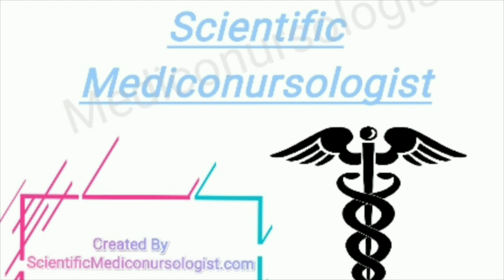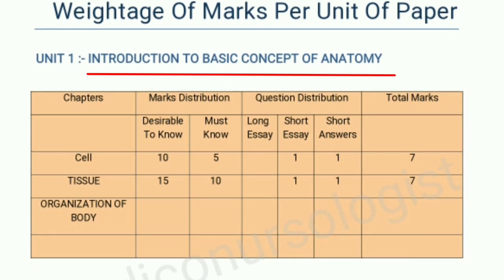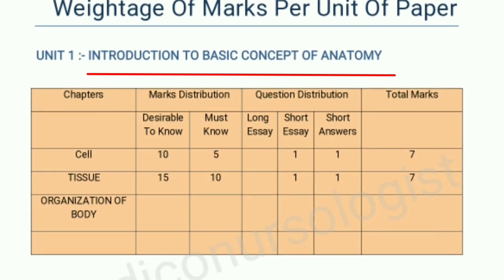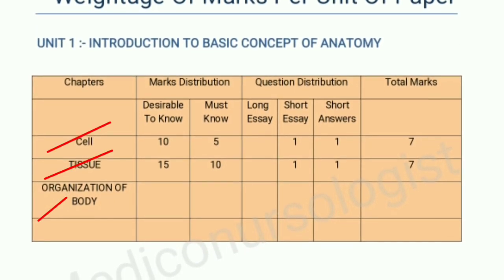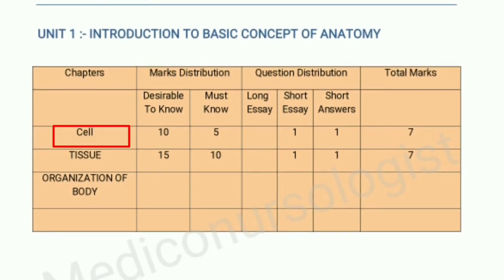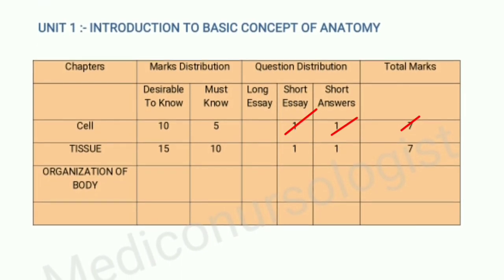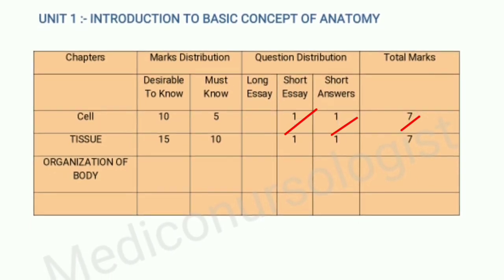Now let's discuss each unit briefly — which unit carries the most marks and what are the major topics to study. Our first unit is introduction to the basic concept of anatomy, which consists of 3 chapters: cell, tissue, and organization of the body. The cell chapter carries 7 marks, where one question comes for 5 marks and another question for 2 marks.